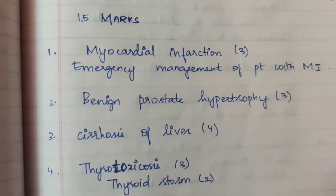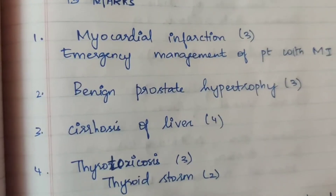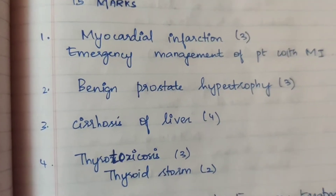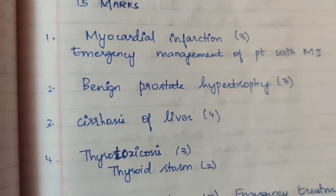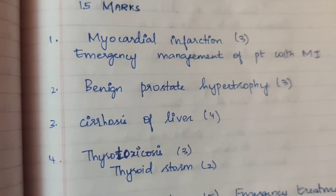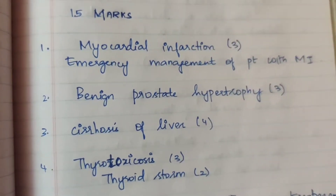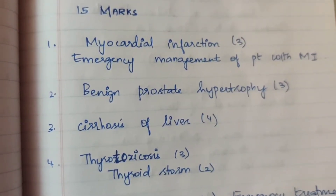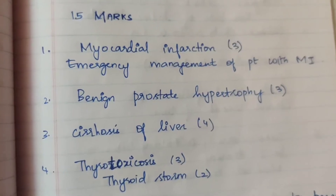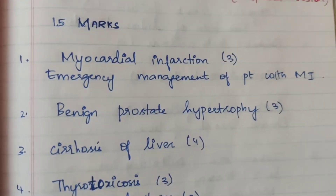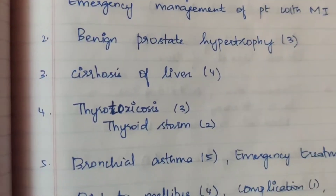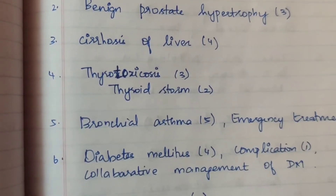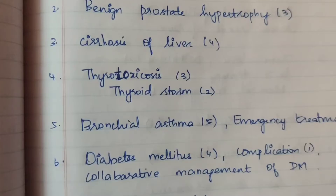In the first 15 marks section: myocardial infarction appears three times. Emergency management of a patient with myocardial infarction is a 5 mark question. Next is benign prostate hypertrophy, which appears three times in the question — as 15 marks and 5 marks.